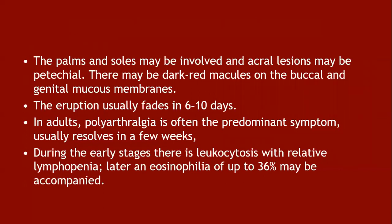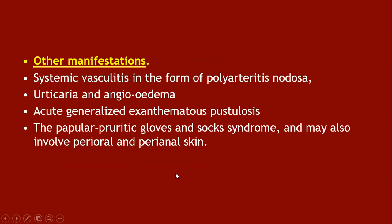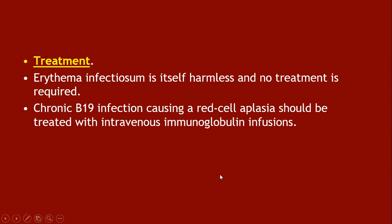The eruption usually fades in 6 to 10 days. In adults, polyarthralgia is often the predominant symptom and usually recovers in a few weeks. During the early stage there is leukocytosis with relative lymphopenia; later, eosinophilia of up to 36% may be accompanied. Other manifestations include systemic vasculitis in the form of polyarteritis nodosa, urticaria and angioedema, acute generalized exanthematous pustulosis, and papular purpuric glove and sock syndrome involving perioral and perianal skin. Erythema infectiosum is itself harmless and no treatment is required. Chronic parvovirus B19 infection causes red cell aplasia and should be treated with intravenous immunoglobulin infusion.